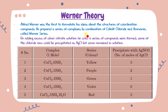On adding excess silver nitrate solution in cold, a series of compounds were formed. Some chloride ions were precipitated as AgCl, but some remained in solution. Whatever is present as a counter ion will react with the added substance and precipitate — those inside the coordination sphere do not precipitate.